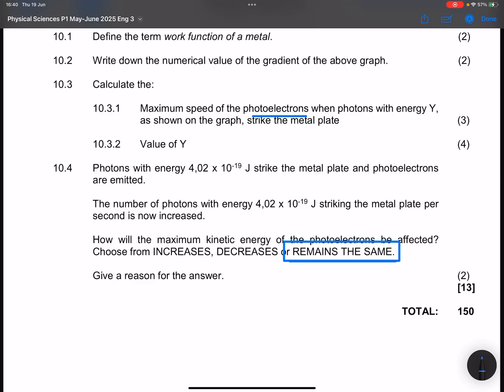Why? Because nothing about the energy of the photon is affected. And the reason for that, we can say that Ek max remains the same because the energy of the photon remains constant.